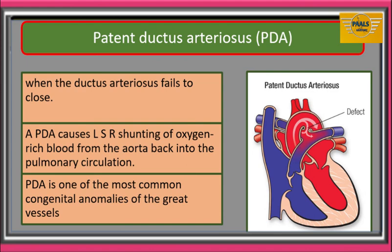PDA is one of the most common congenital anomalies of the great vessels. PDA can be treated with prostaglandin synthesis inhibitors such as indomethacin, acetylcholine, histamine, and catecholamines, all of which promote closure of the ductus arteriosus.